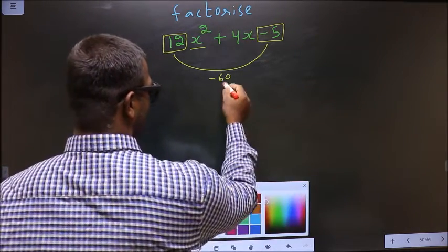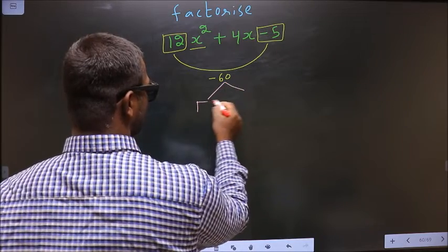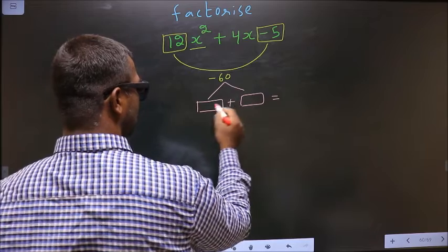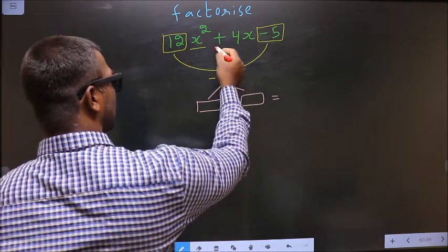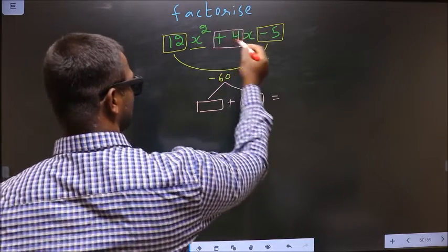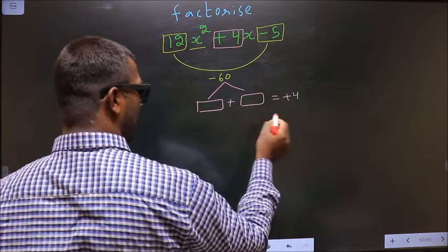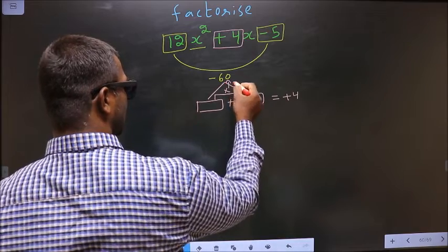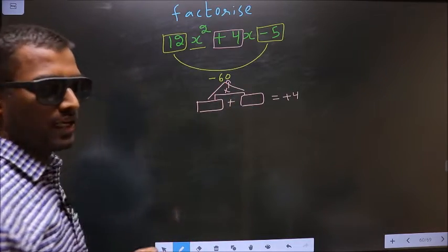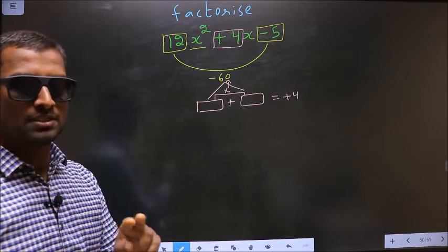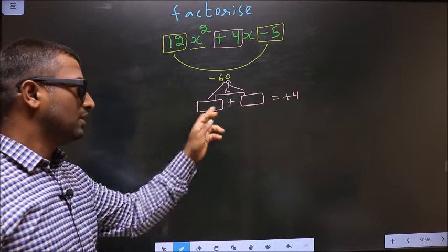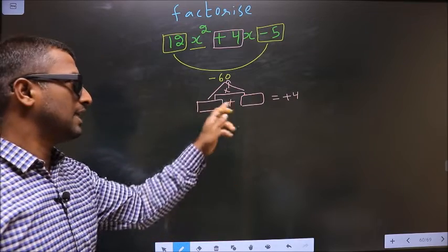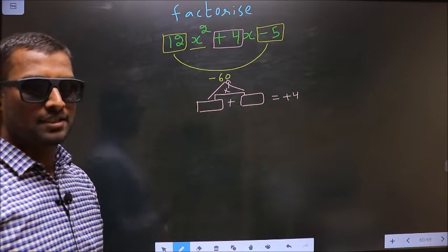Now you should look out for 2 numbers such that when you add these 2 numbers you should get the middle coefficient, that is +4, and also when you multiply you should get -60. I repeat: you should look out for 2 numbers such that when you add you should get +4 and when multiplied you should get -60.